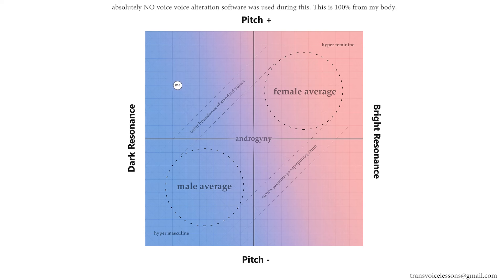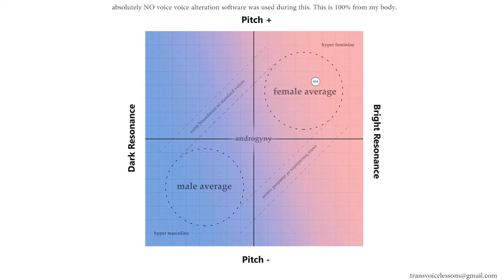Now I'm just gonna slowly start to bring the pitch down while also keeping it nice and dark, and then I end up with something like here. And now I'm actually just gonna slowly start to bring this into the very middle of the androgyny zone. For me, this is kind of what I interpret my own voice as androgynous with. And now I'm just gonna slowly start to bring it back up into a linear area in feminine — and now I am bright in feminine, slightly higher and brighter than the female average.